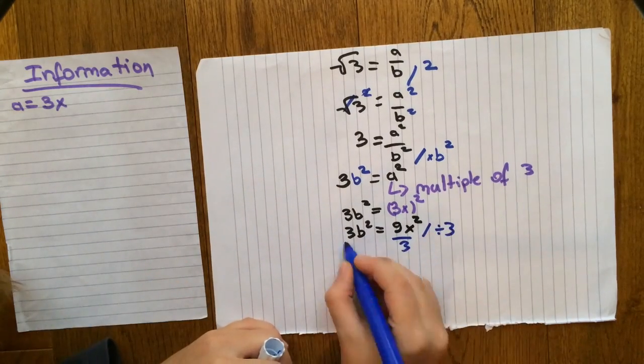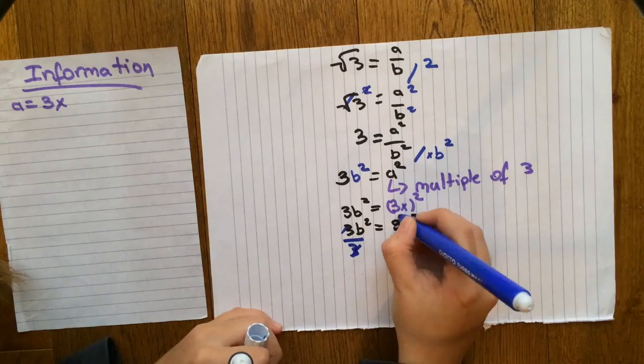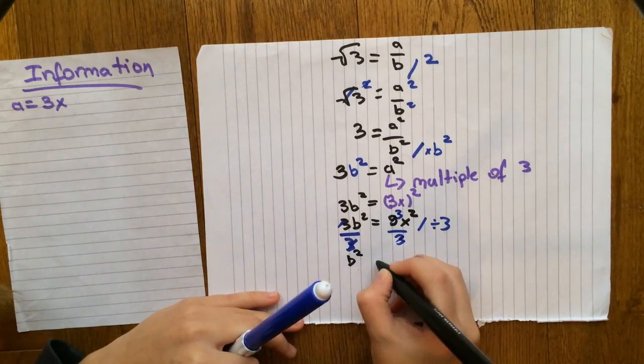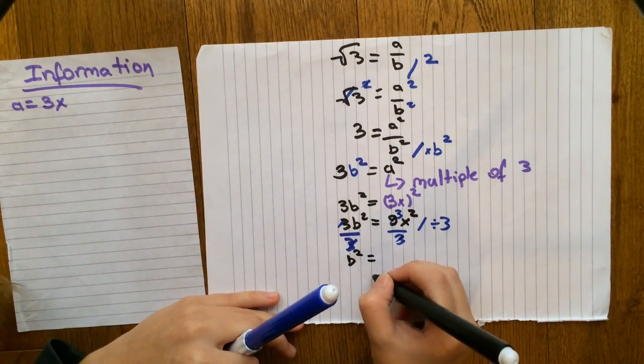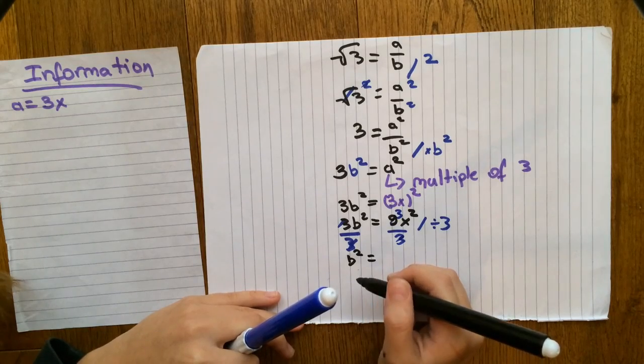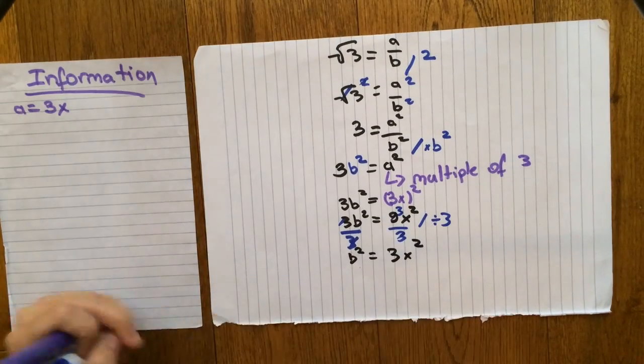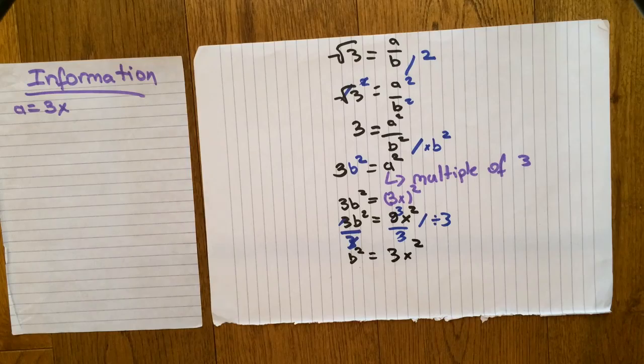Now, we can actually simplify on both sides by dividing by 3. So on the left side of the equation, we are left with b squared, and on the right side of the equation, we are left with 3x squared.